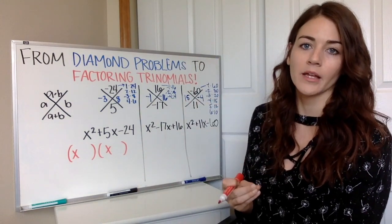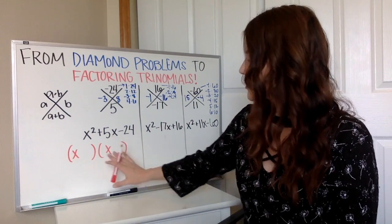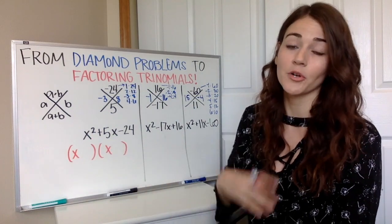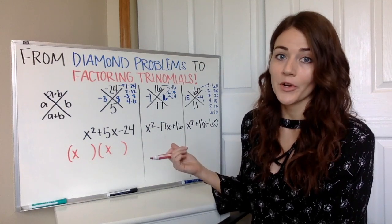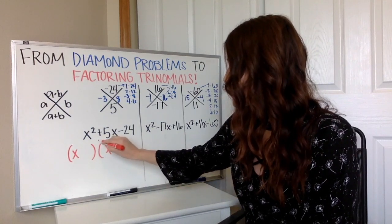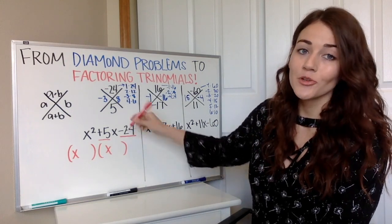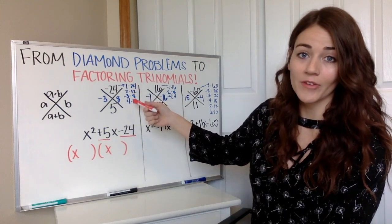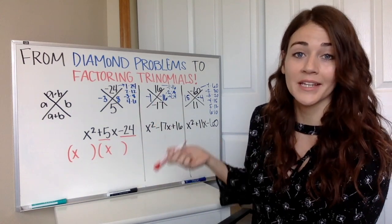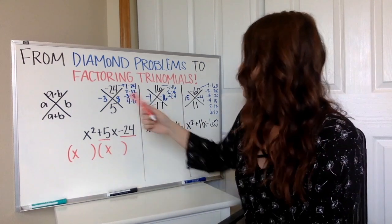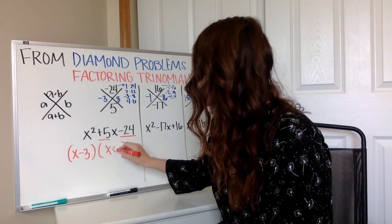We're trying to get it back into the original form where you might have been using this form before and distributing, now we're going backwards. And to do that, we want to find two numbers that add to get us this, multiply to get us this, which we just did up above in our diamond problem. That's exactly what you're doing in diamond problems. So we're just going to use x minus 3, x plus 8.